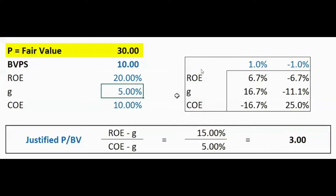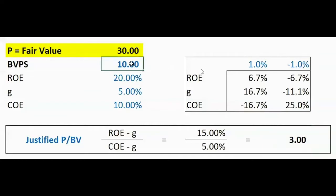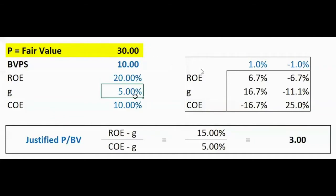Now let's play with the growth rate. Assume the growth rate is not zero but 5%. With a higher growth rate, the justified price-to-book multiple you'd be willing to pay is higher — it becomes 3 times. That's because: ROE minus G is 20% minus 5% equals 15%; cost of equity minus G is 10% minus 5% equals 5%; so 15 divided by 5 equals 3 times.